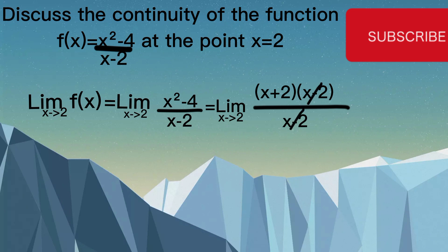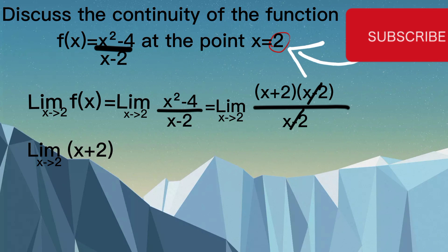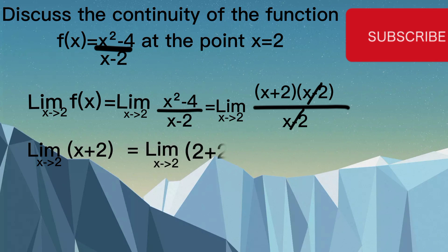After cancelling, we have the limit as x approaches 2 of (x + 2). Plugging in 2 gives us limit as x approaches 2 of (2 + 2), which equals 4. So the answer to this question is 4.